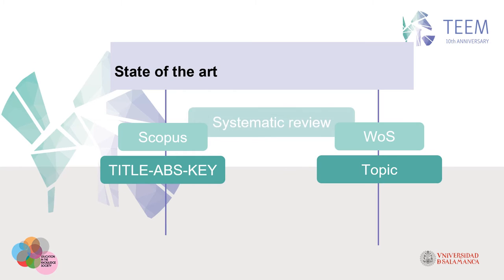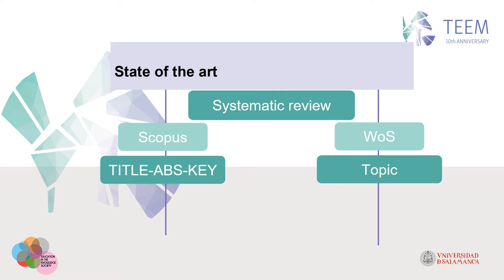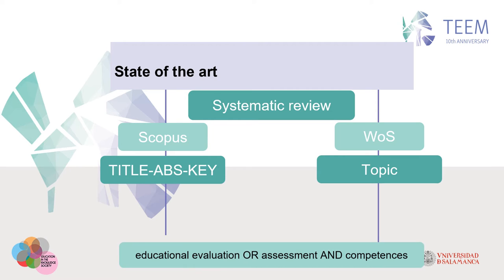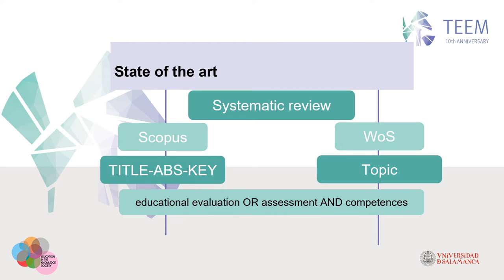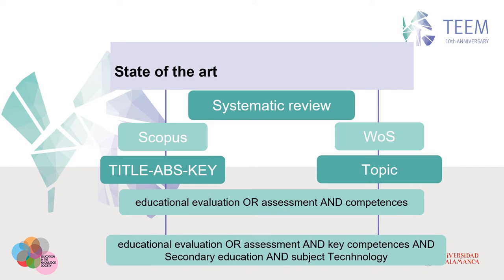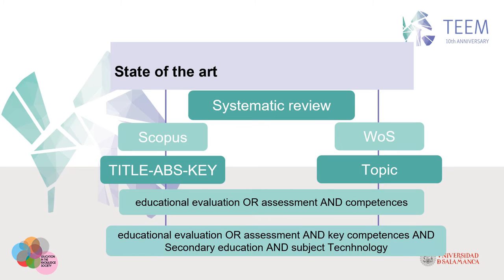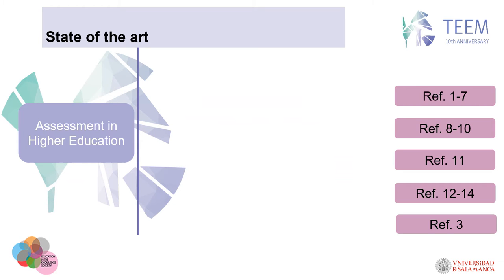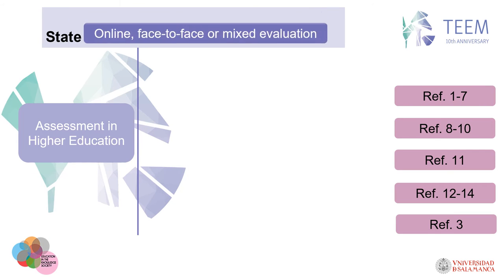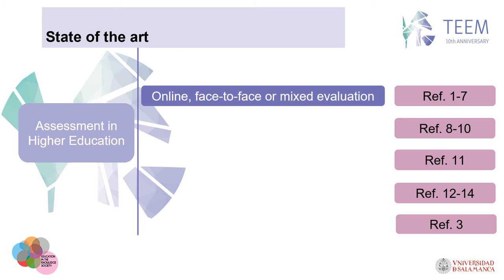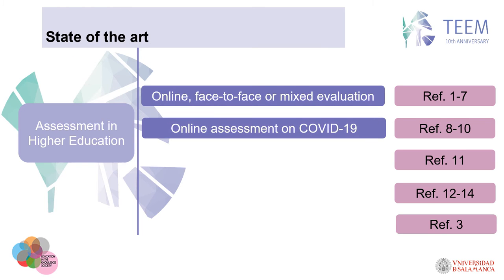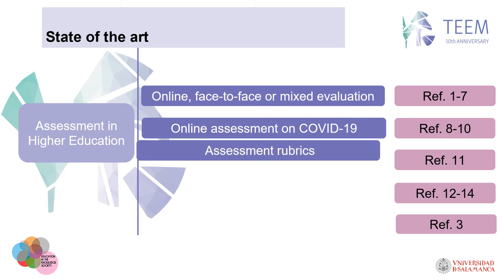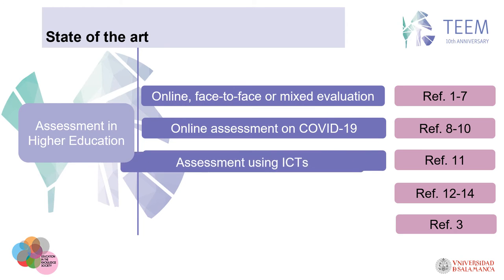A systematic review was carried out by searching the Scopus and Web of Science databases with the following keywords: educational evaluation, assessment, and competencies — obtaining a large number of results. Including the additional terms secondary education, subject technology, and key competencies, the results were very scarce. This confirms that there are few articles centered on the study of these thesis topics. There are several publications that approach assessment in higher education, and that work contains useful ideas for evaluation by competencies in the subject of technology at secondary school level.